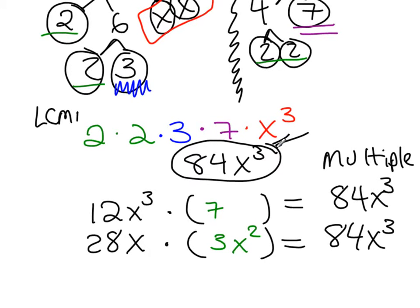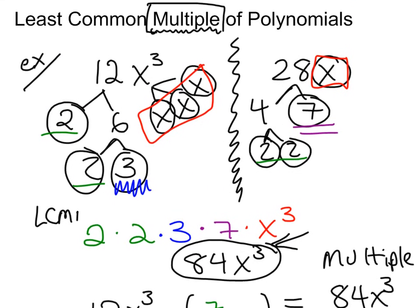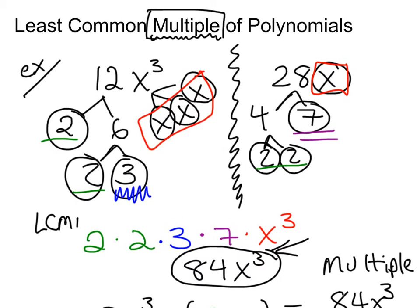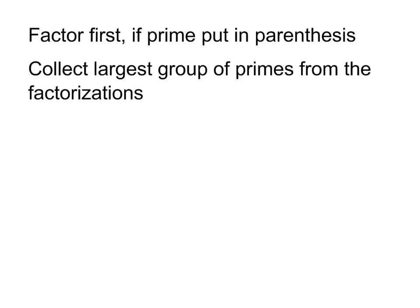What our answer in the end is, is 84x cubed. So that's how we find the multiple. So let's just recap the steps. We're going to factor first. If there is no factoring and it's prime, we'll just put the thing in parentheses. That's what we're going to collect. We're going to collect the largest group of primes from the factorizations. Now, the one I gave you was nice, and I promised you it would be nice. So let's see another one.